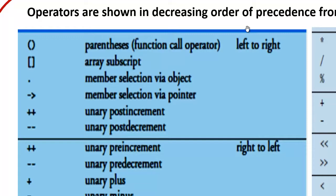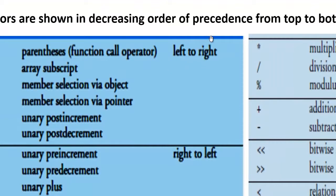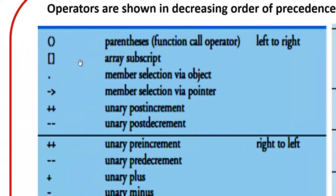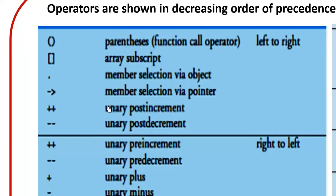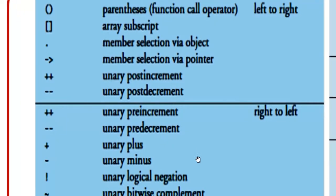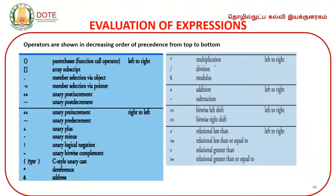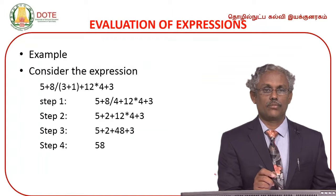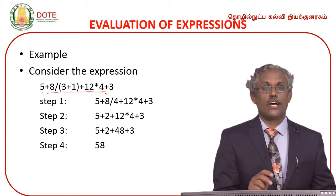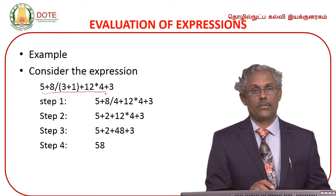Operators are listed in decreasing order of precedence. Parentheses and subscripts have the highest priority. Then unary operators, then multiplication and division, then addition and subtraction, then relational operations, and last logical operations.